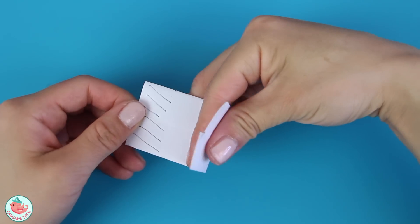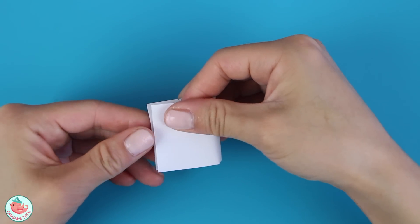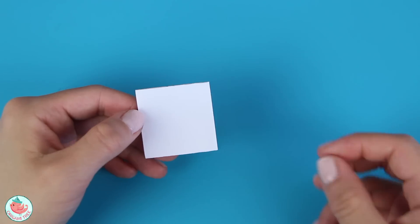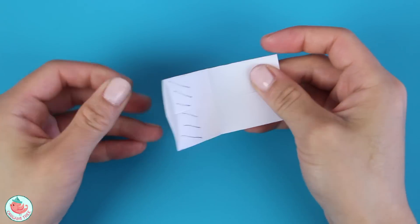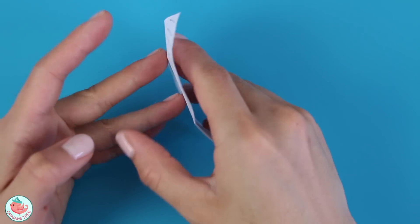Now we're going to fold the entire thing in half to create a vertical center crease. And then unfold. After that, we want to unfold the top and bottom flaps and flip the whole thing over.